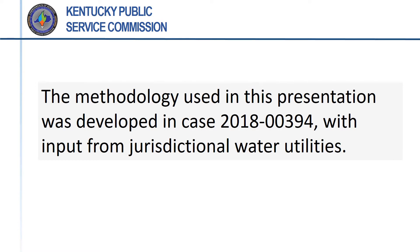The new water loss calculation form is the end product of an administrative proceeding before the PSC, Case 2018-00394. The PSC initiated this case because its review of a number of utilities experiencing significant levels of water loss revealed a lack of uniformity and rigor in calculating water loss. In order to provide consistent and accurate reporting of water loss, the PSC initiated the administrative proceeding, making all jurisdictional water utilities parties to the case.